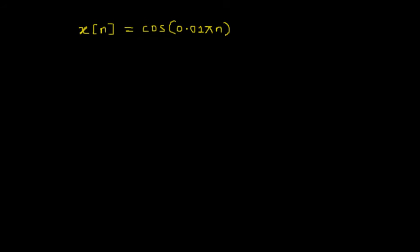To test it, we compare the given signal with the standard signal, which is cos(ωn). We can write that ω, the angular frequency, equals 0.01π. The given discrete-time sinusoidal signal is periodic if its angular frequency ω is a rational multiple of 2π. If we can express ω in terms of this equation, the signal is periodic.